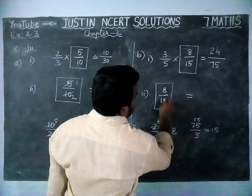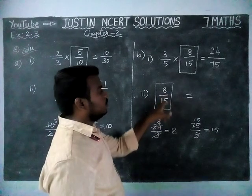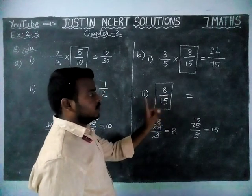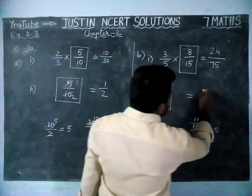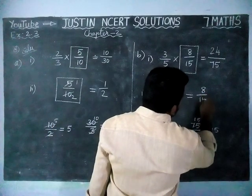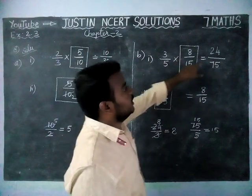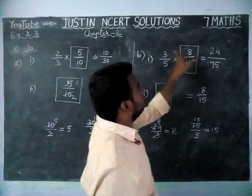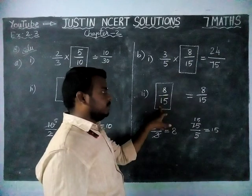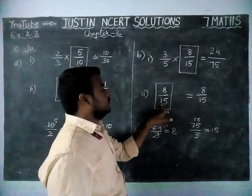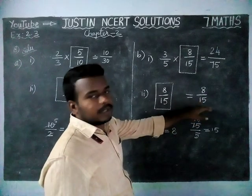Now, 8 by 15. We have to write it in simplest form. 8 by 15 doesn't have any common divisor except 1. We can divide by only 1. So, this is already a proper fraction — we cannot simplify. The simplest form is also the same: 8 by 15. So, 3 by 5 into 8 by 15 is equal to 24 by 75, and the box value is 8 by 15. This 8 by 15 is already in simplest form.